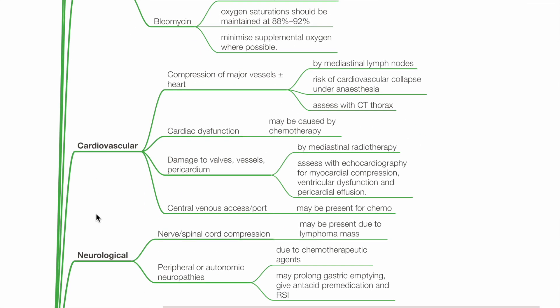Cardiovascular: Compression of major vessels with or without the heart by mediastinal lymph nodes may occur, and there is risk of cardiovascular collapse under general anesthesia. Assess with CT thorax. Cardiac dysfunction may be caused by chemotherapy. Damage to valves, vessels, and pericardium may occur due to mediastinal radiotherapy. Assess with echocardiography for myocardial compression, ventricular dysfunction, and pericardial effusion. Central venous access or a port may be present for chemotherapy.